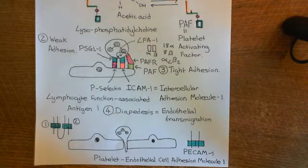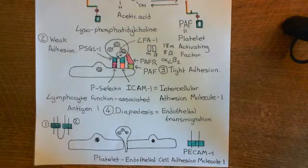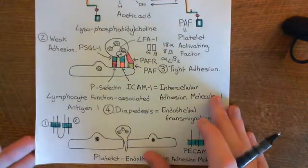We're now going to look at Type 2 activation, which takes longer and is induced in endothelial cells by ligands such as interleukin-1 and tumor necrosis factor alpha. We're going to look at the pathways by which interleukin-1 and tumor necrosis factor alpha induce Type 2 activation within the endothelial cells.